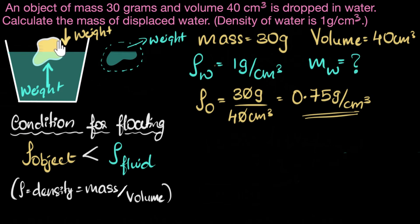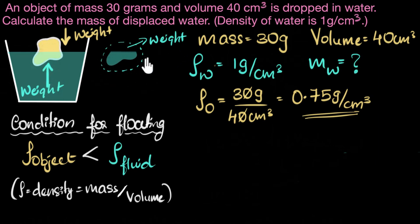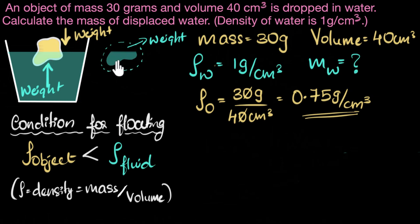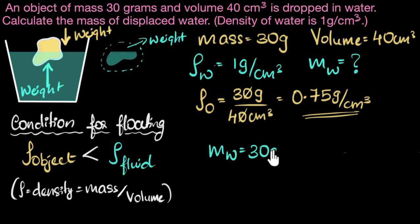We know that our stone is floating — it's stationary. What can we say about these two forces? They have to be equal to each other. If the buoyant force was larger, the stone would rise; if the weight was larger, it would sink. So the two forces must be exactly equal, which means the weight of this stone should equal the weight of the displaced liquid. Since weight is just mass times g, if the weights are the same, the masses must be the same as well. The mass of the stone is 30 grams, so the mass of the displaced water is also 30 grams.